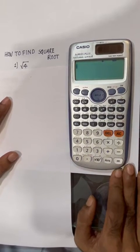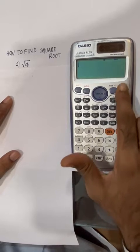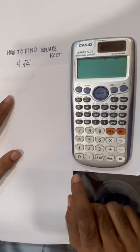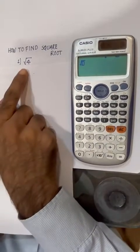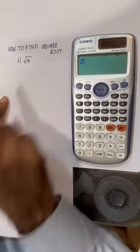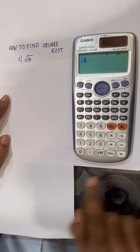We'll take our first example, square root of 4. Turn on your calculator, press the square root symbol, then press the number you want to find the square root of. Press 4 and press equals.